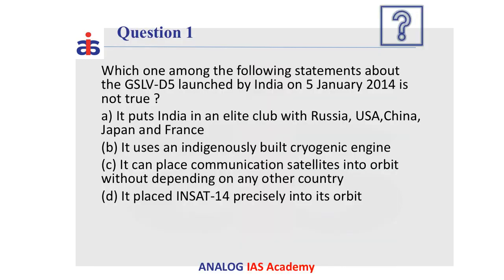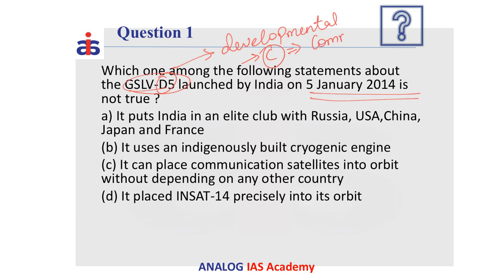Now let us look at a previous year question: 'Which of the following statements about GSLV-D5 launched by India on 5th January 2014 is not true?' When you see the suffix D in a launch vehicle name, it means it is a developmental version. If the suffix is C, it is a commercial version used by ISRO. This question is from a UPSC exam — not the prelims itself, but another exam conducted by UPSC.